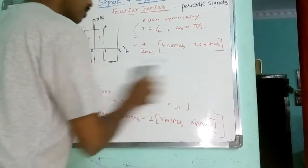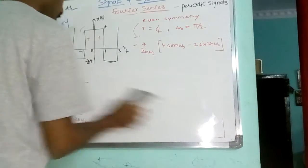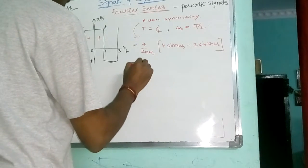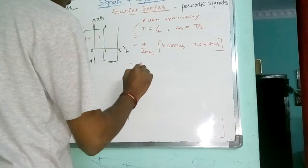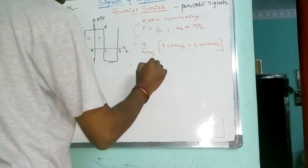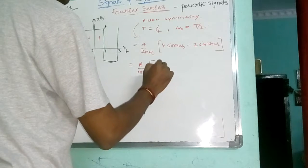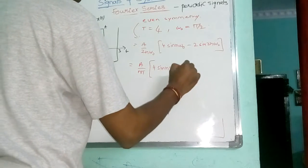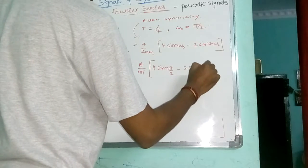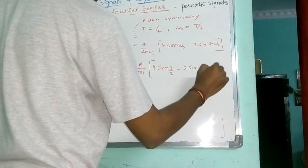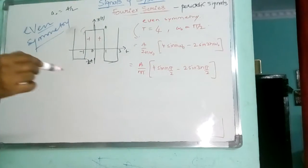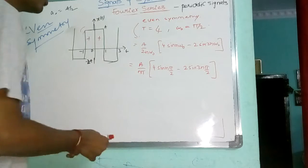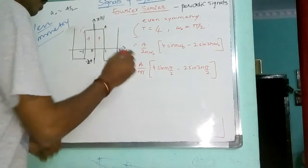I am going to do this pi by 2. So, A by N pi, into 4 sin N pi by 2, minus 2 sin N 3 pi by 2. This is the equation of A N at last.